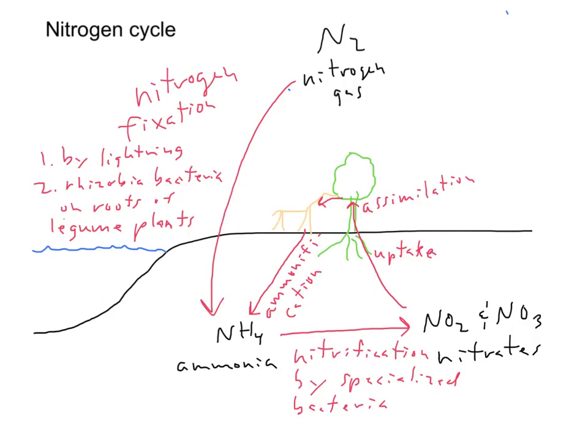Ultimately, in order to make this cycle complete, we have to have some way of reforming the nitrogen gas. Otherwise, over time, it would deplete. And so there are still other bacteria that do the step called denitrification, by specialized bacteria. And thus completes the process.